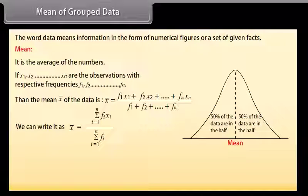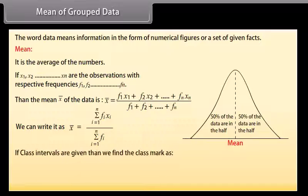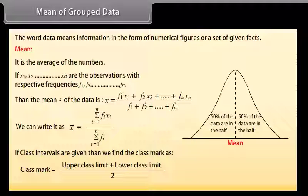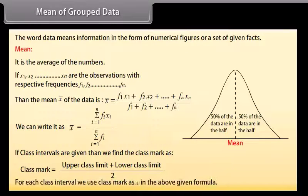If class intervals are given, then we find the class mark as: class mark equals upper class limit plus lower class limit divided by 2, for each class interval. We use the class mark as Xi in the above formula.